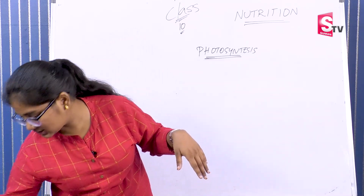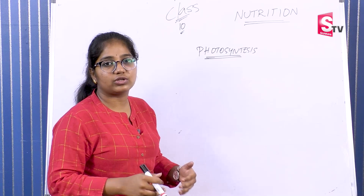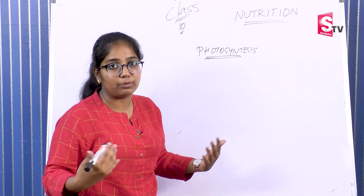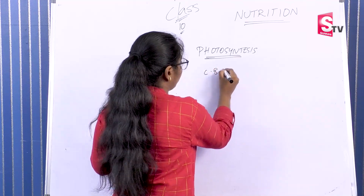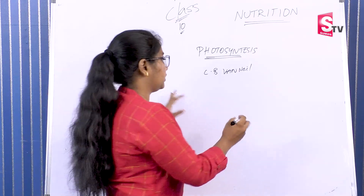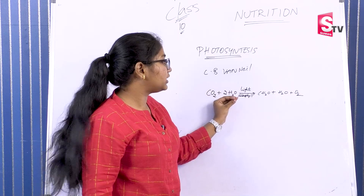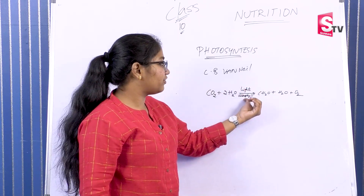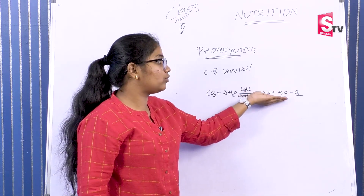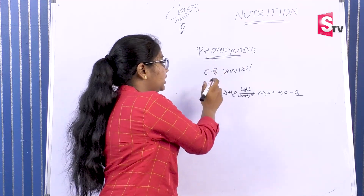The photosynthesis process was discovered by scientist C.B. Van Niel. The equation: plants take in carbon dioxide and water in the presence of light and chlorophyll, and release carbohydrates, water, and oxygen as products.